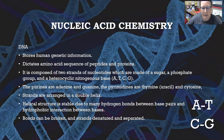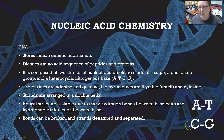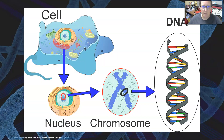The helical structure is stable due to many hydrogen bonds between the base pairs and the hydrophobic interactions between the bases. The bonds can be broken and strands denatured and separated. The base pairs always bind A to T or T to A, and then C to G or G to C — that is consistent and it always happens that way.